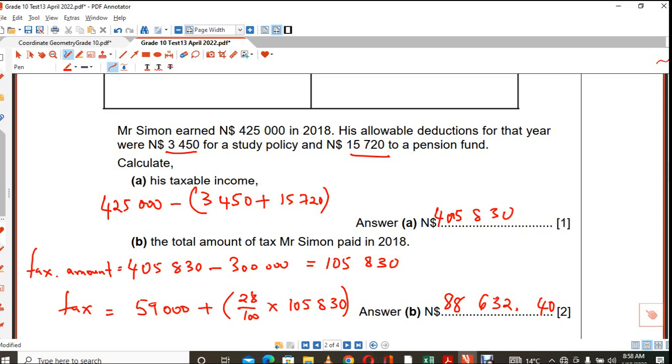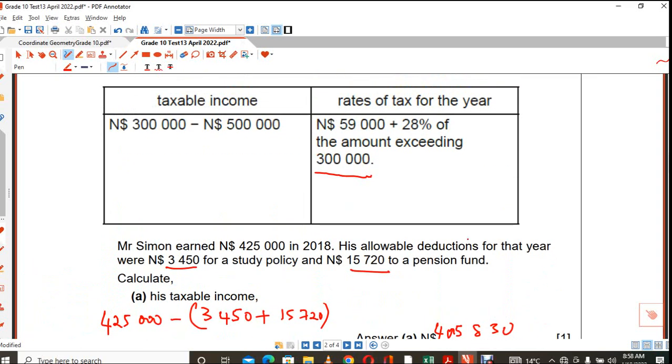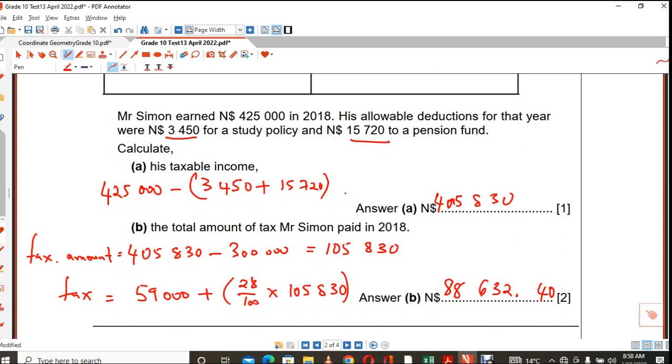So first, you have all the money, like the allowable deductions, whatever it is, pension or study policies, you subtract from the person's gross salary, right? But what it gets per year. And then you must go back to your tax table and subtract whatever amount is there on that bracket. In this case, it was 300,000 that you were supposed to subtract. And once you have subtracted the 300,000, now that 105,830, that is the 28% that you must find, plus the 59,000.